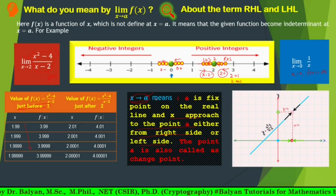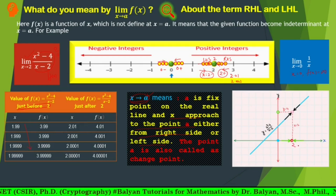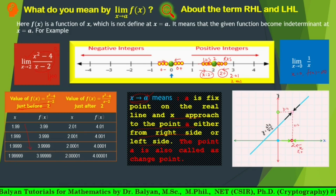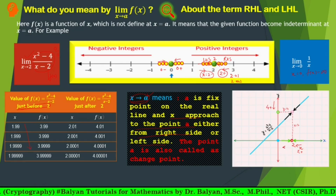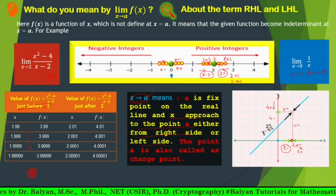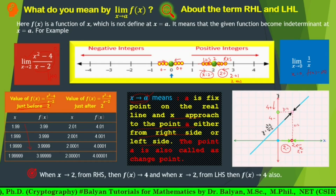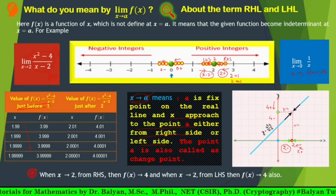Here, this is our 2. When x is approaching from the right side, that is 2 plus, y becomes 4 plus. But when we are approaching from this side, that is 2 minus, y becomes 4 minus. It is clear that when x tends to 2 from the right-hand side, then f(x) tends to 4. And when x tends to 2 from the left-hand side, then f(x) tends to 4 also.